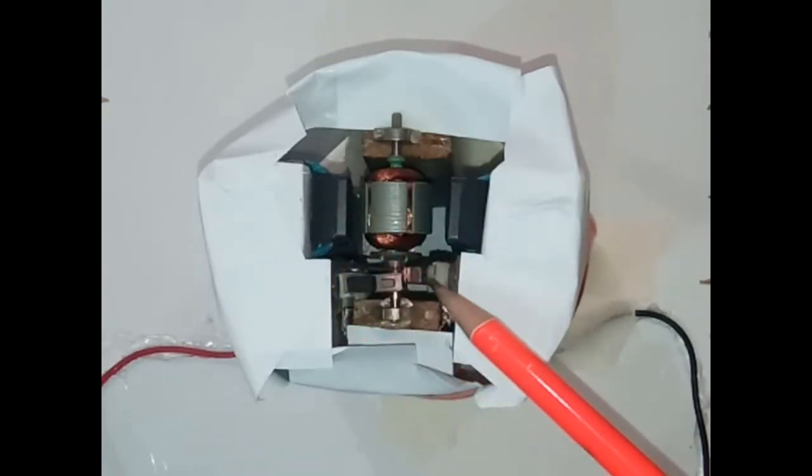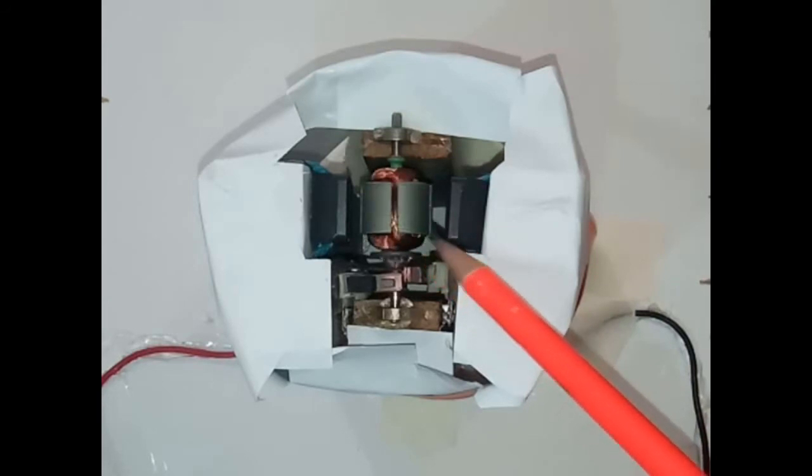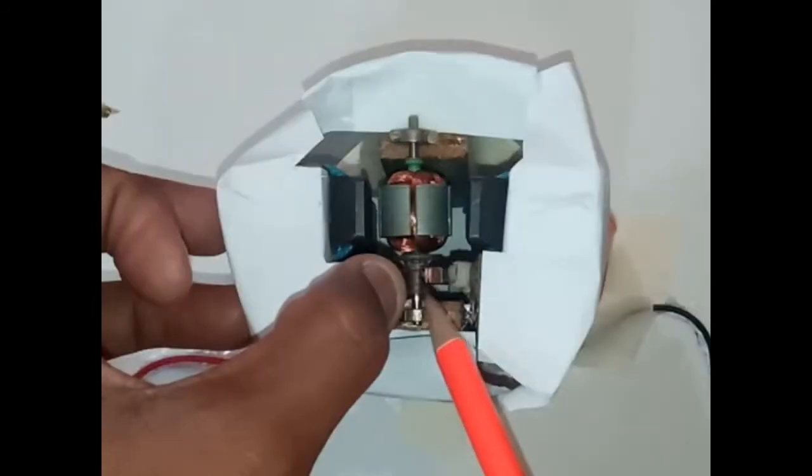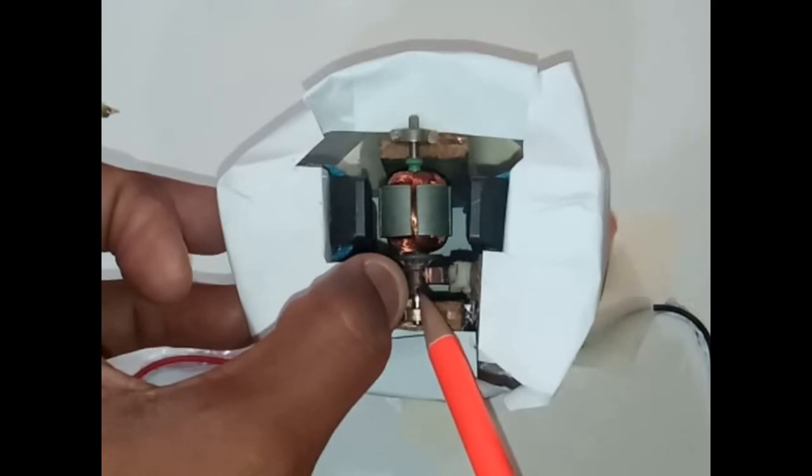The commutator or split ring, which will be below this carbon brush, is fixed to this coil and rotates along with it. So there will be a gap. So it is known as split ring commutator or commutator or split ring.